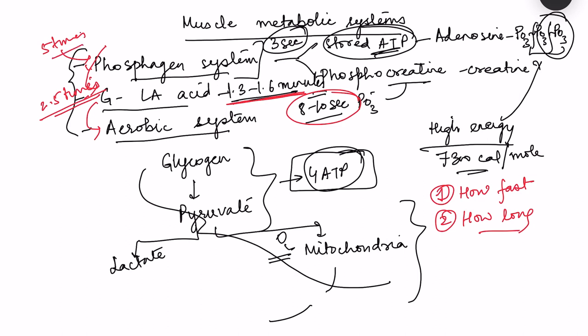For continuing exercise for long duration, we need the aerobic system. For producing more power with the same muscle mass, it will be the phosphagen and glycogen lactic acid systems. For endurance — continuing exercise for longer duration — we need the aerobic system. That is how energy is provided for exercise.